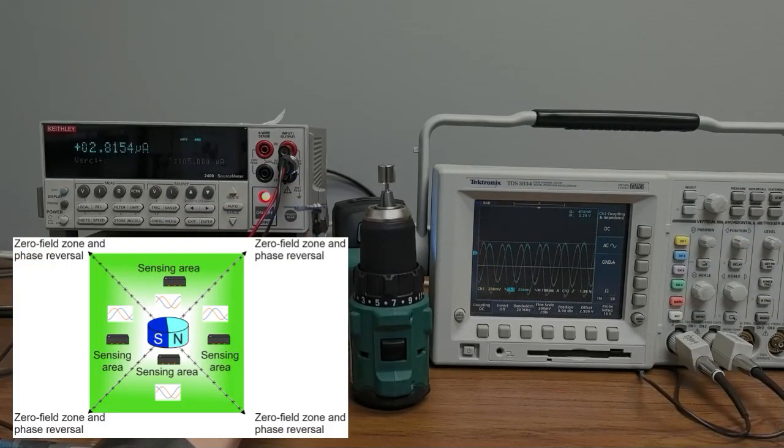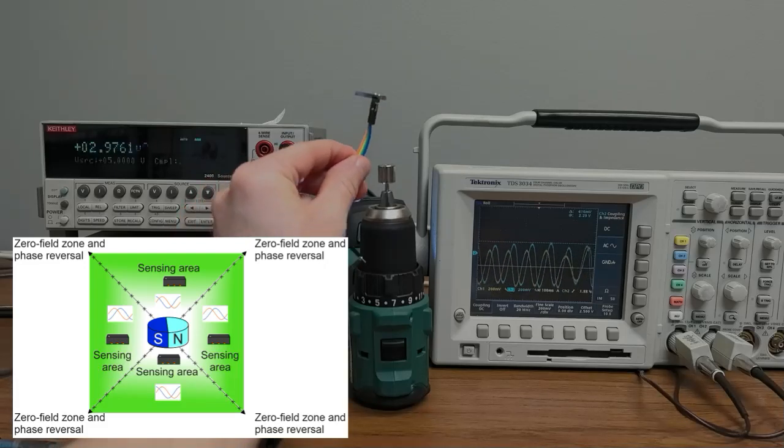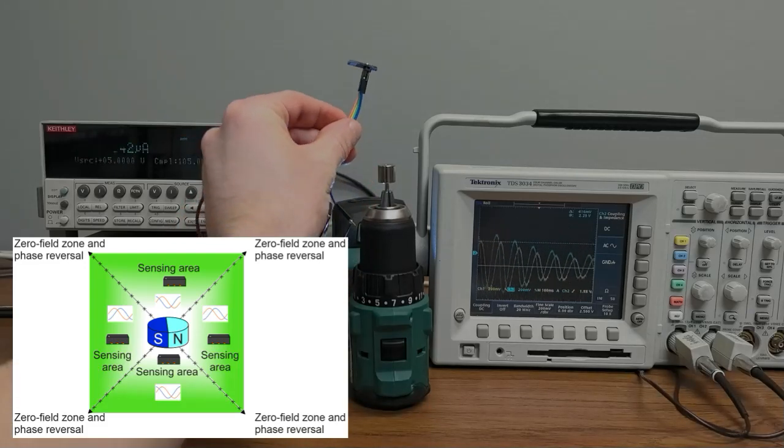The oscilloscope is set for 200 millivolts per division, and the output amplitude is as high as 1.5 volts peak-to-peak.